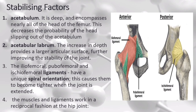Stabilizing factors. The primary function of the hip joint is to weight bear. The acetabulum is deep and encompasses nearly all of the head of the femur, decreasing the probability of dislocation. A horseshoe-shaped fibrocartilaginous acetabular labrum increases its depth, providing a larger articular surface and further improving stability. The iliofemoral, pubofemoral and ischiofemoral ligaments are very strong, and along with the thickened joint capsule provide a large degree of stability. These ligaments have a unique spiral orientation, causing them to become tighter when the joint is extended.